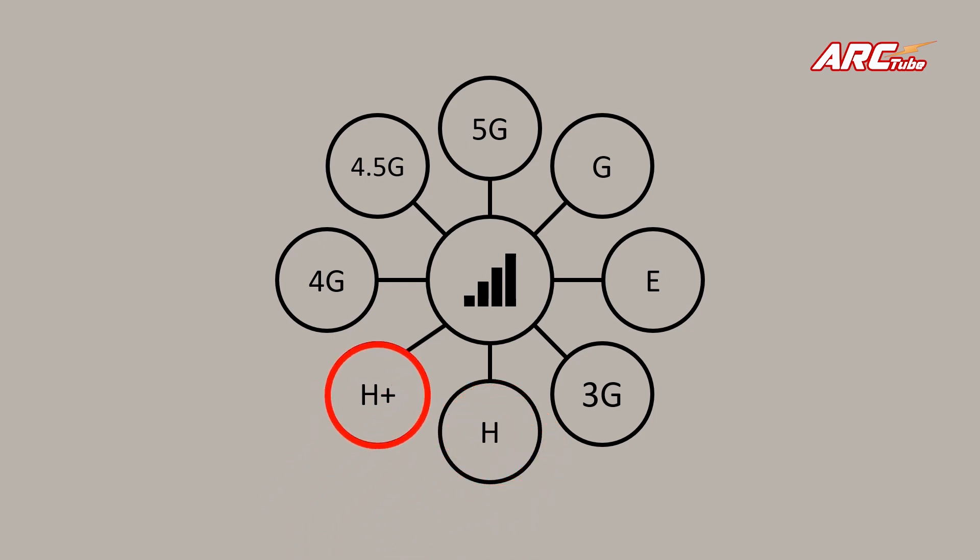HSPA+, an improved version of HSPA, considered as the 3.75G, which can yield up to 21 megabits per second on downlink. There is another variant known as the DC-HSPA+ or the Dual Carrier HSPA+, which accommodates two separate frequency carriers so that theoretically it can support up to 42 megabits per second on downlink.